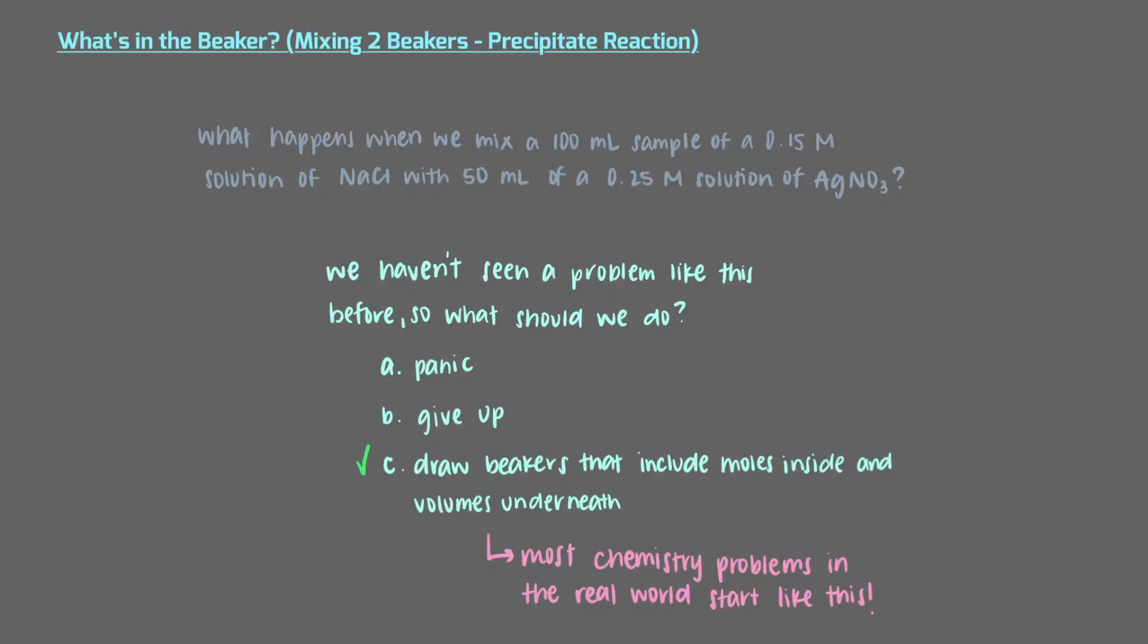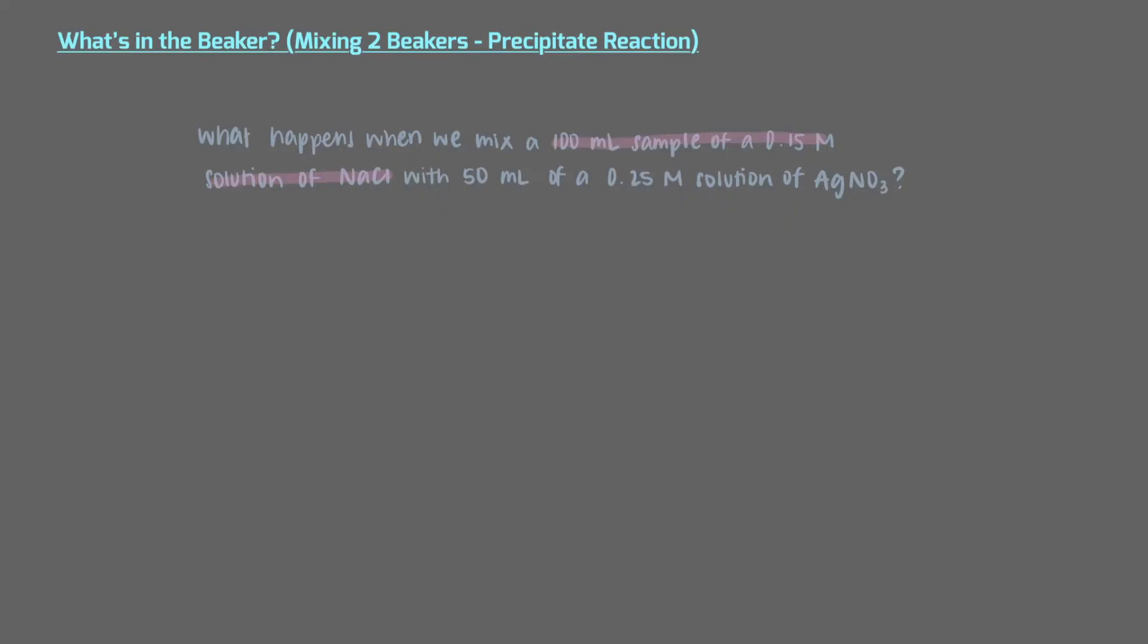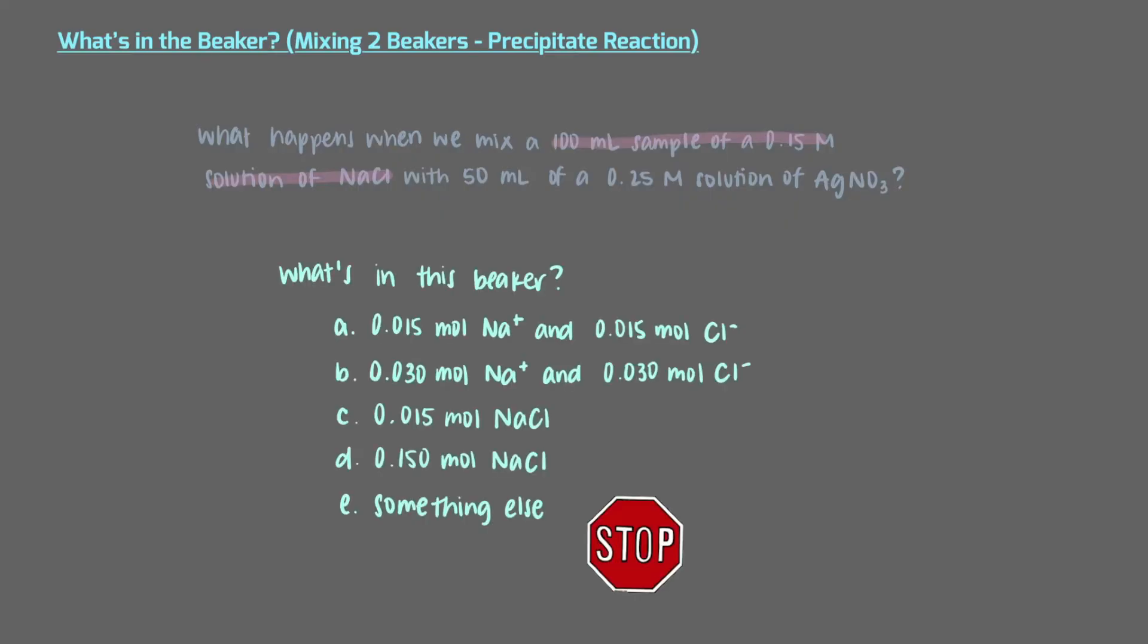Let's break up the problem and tackle each beaker separately. Looking at this part of the problem, what's in the beaker? Remember that sodium chloride is a soluble ionic compound and ionic compounds split up into ions when dissolved in water. Your textbook will have rules that you can use to determine if a given ionic compound is soluble.